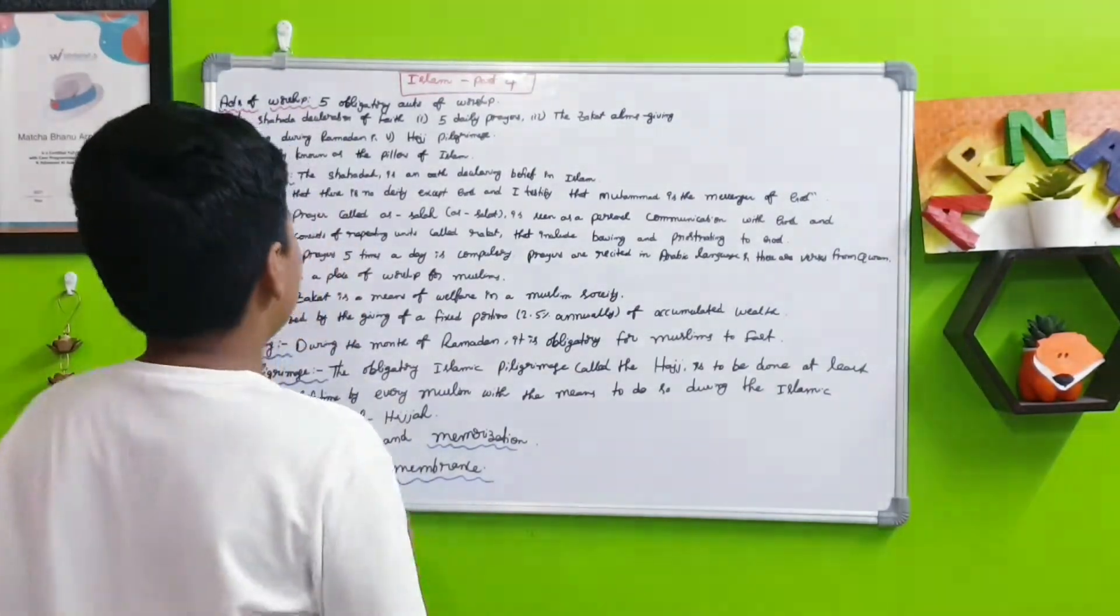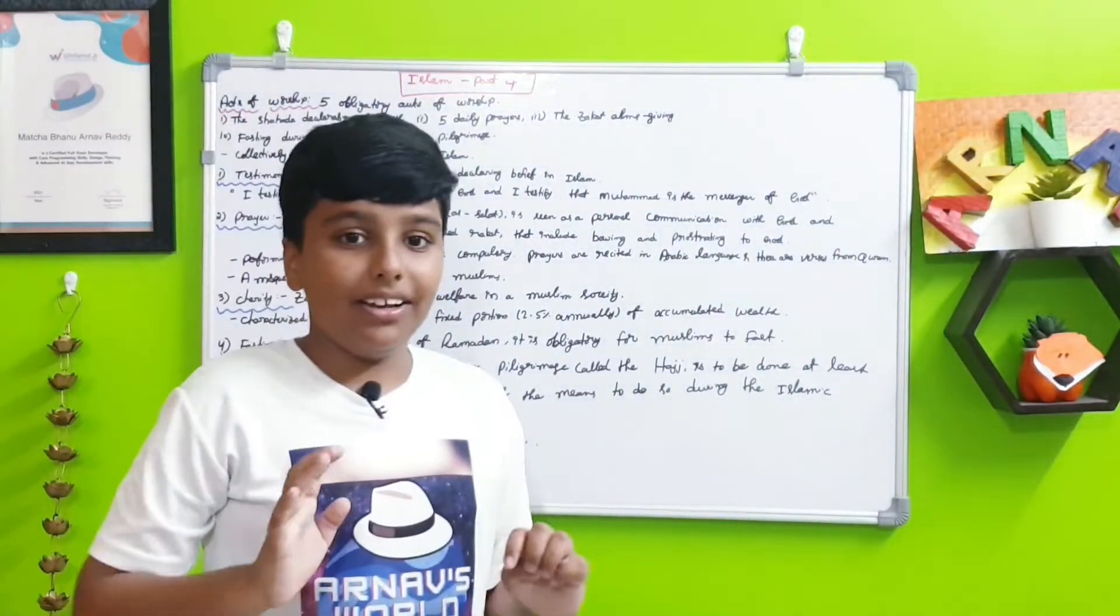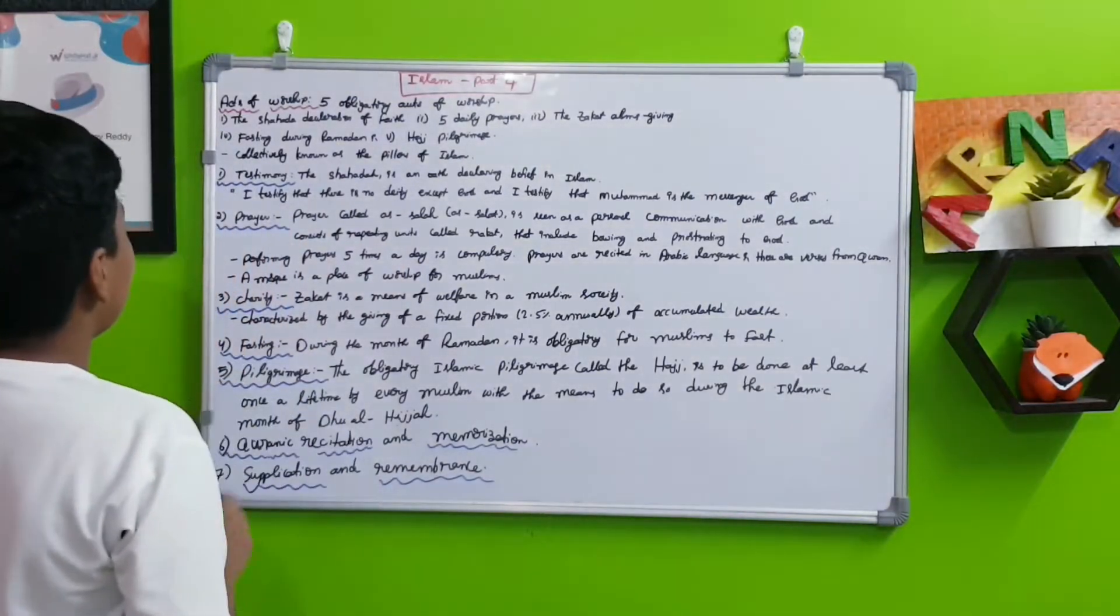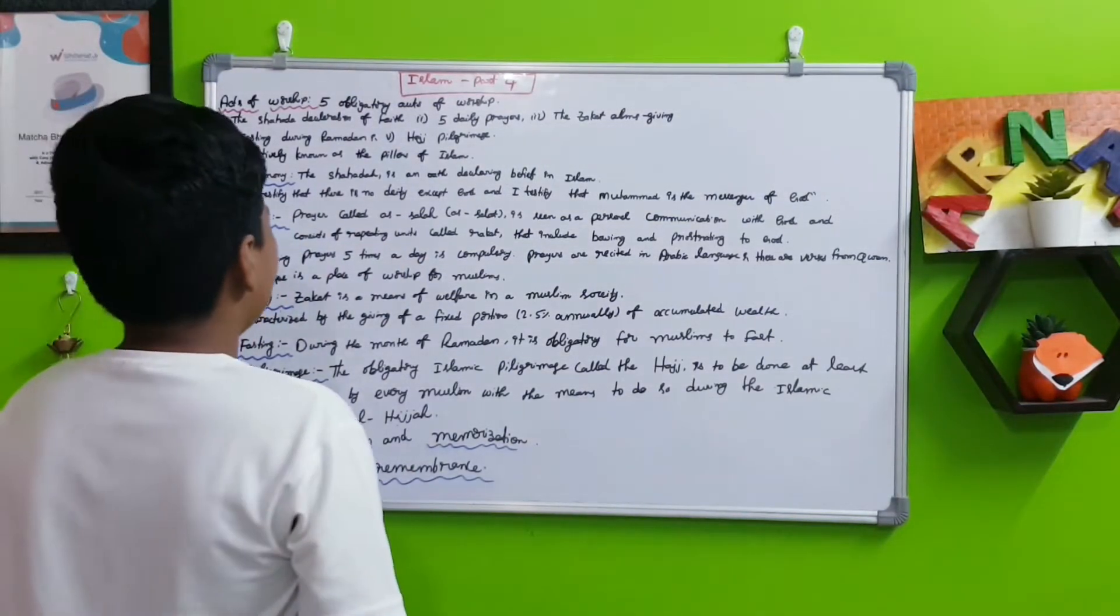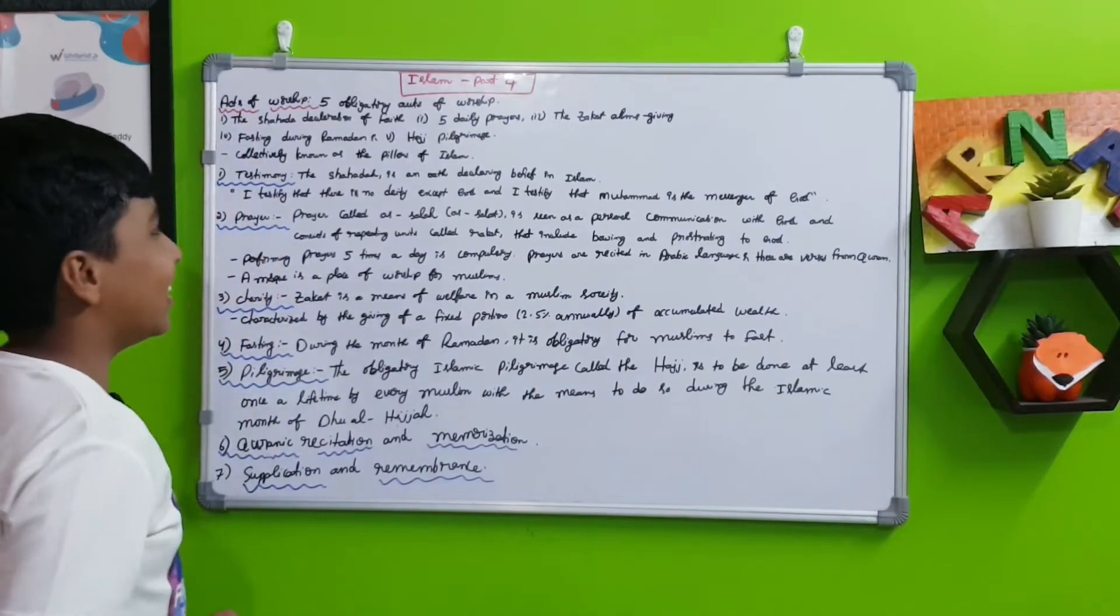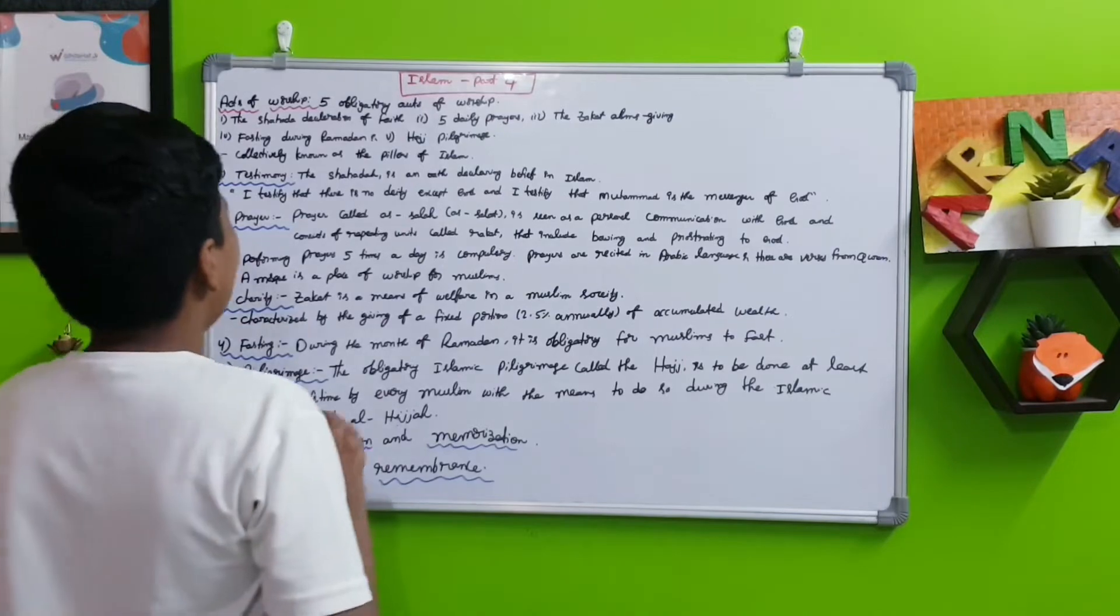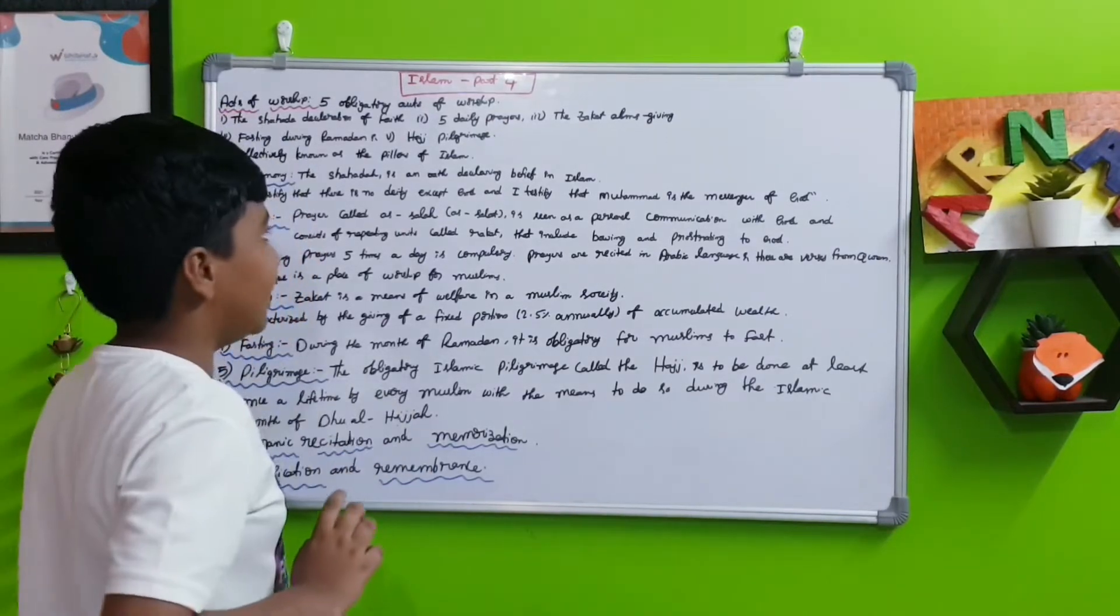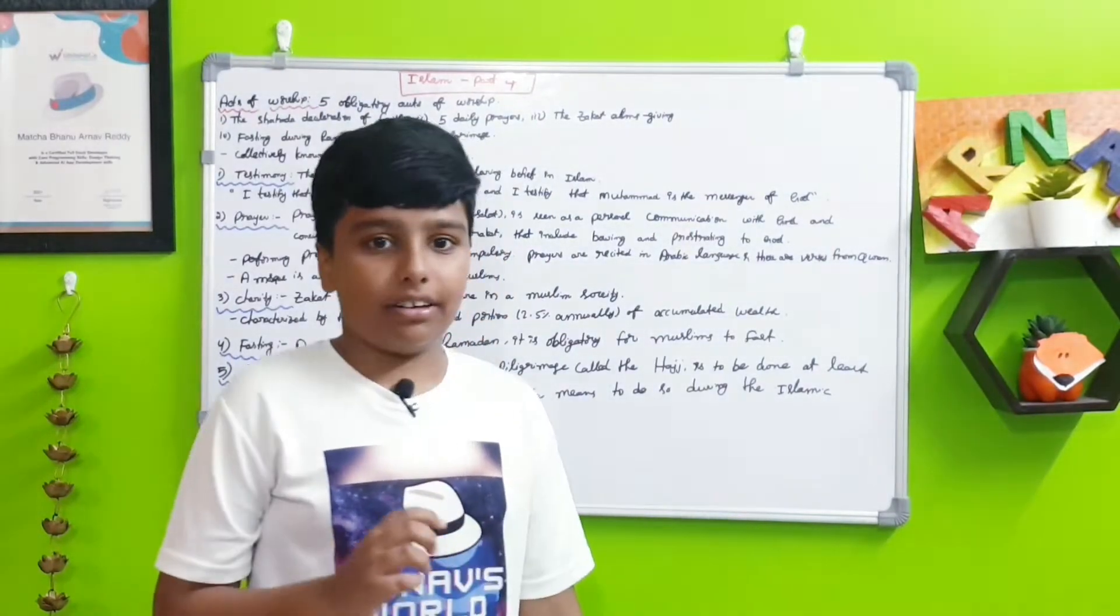These five are known as the five pillars of Islam. The first one is testimony. The Shahada is an oath declaring belief in Islam. This oath is: 'I testify that there is no deity except God, and I testify that Muhammad is the messenger of God.'